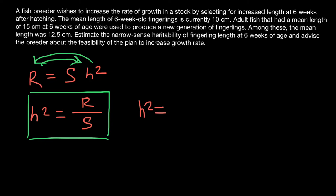cm, and we got 12.5 cm in the F1 generation. So the response to selection is 12.5 minus 10, which equals 2.5 cm. The selection differential is 15 cm.